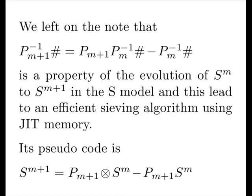We left on the note that our first minor primordial algebra is a property of the evolution of our current S^m mixed with our next S^m in the S-model, and this lead to an efficient sieving algorithm using just-in-time memory allocation.